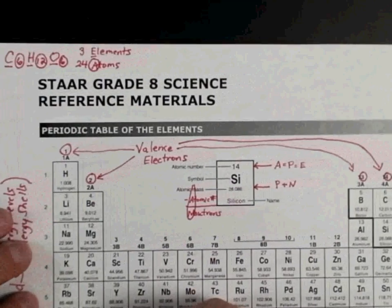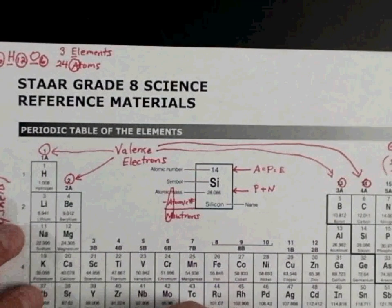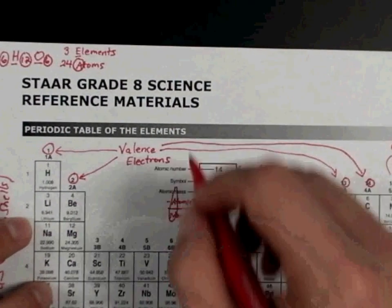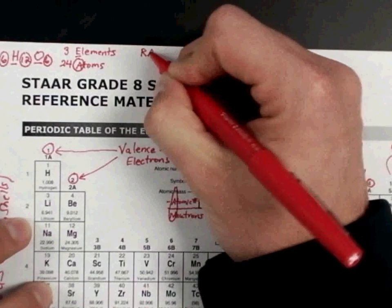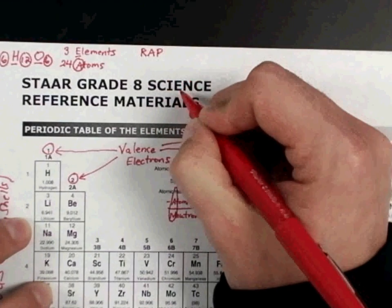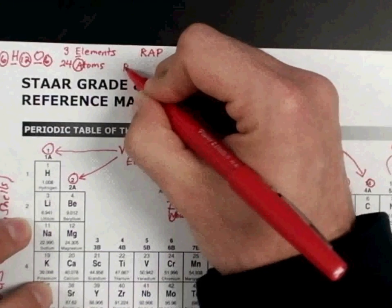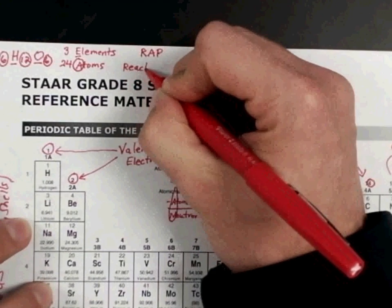All right, the next thing you need to know about chemistry is the RAP acronym that we gave you. And this is talking about balanced and unbalanced equations. On each side of the arrow, there are reactants on the left and products on the right.